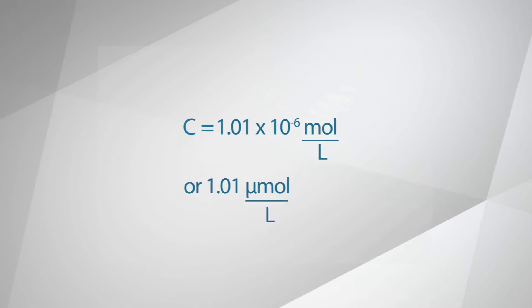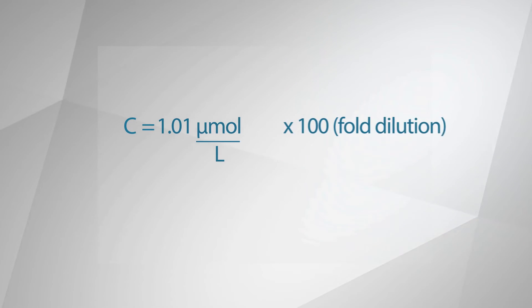This equals a concentration of 1.01 times 10 to the negative 6 moles per liter, or 1.01 micromoles per liter. Next, multiply by the fold dilution to get your working concentration. In this example, the fold dilution is 100, so the concentration is 101 micromolar.